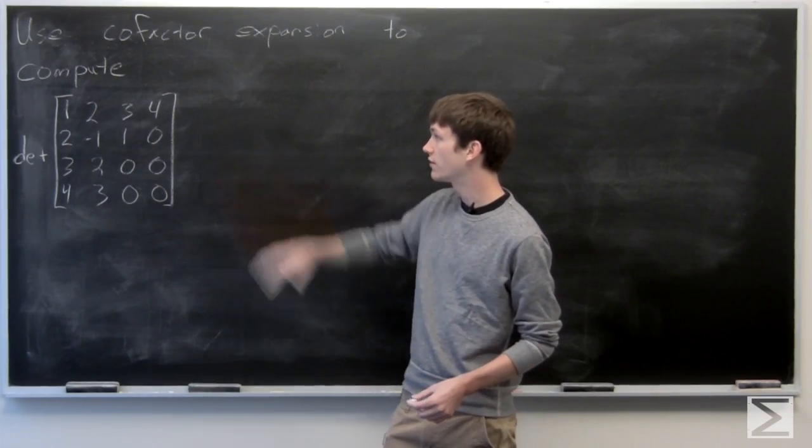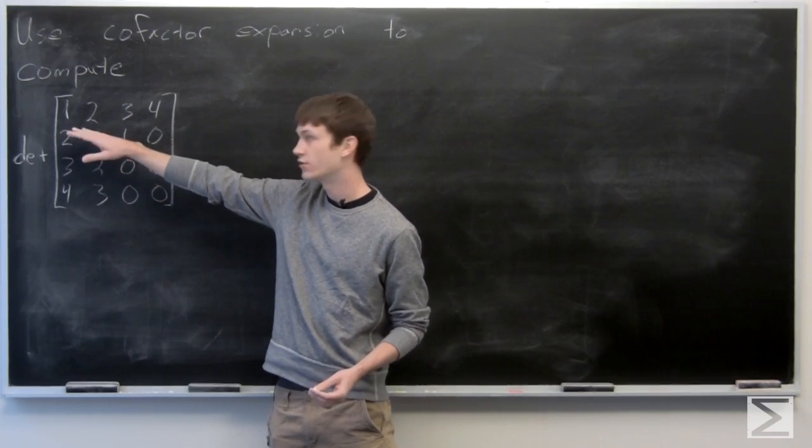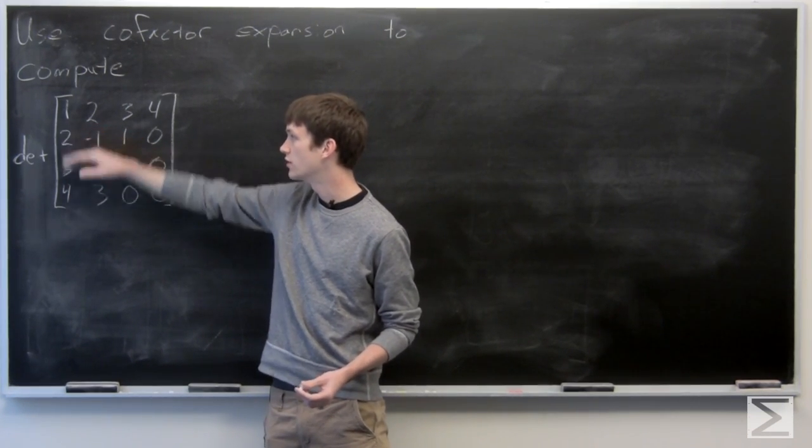In this problem, we're asked to use cofactor expansion to compute the determinant of our matrix with row 1 as 1, 2, 3, 4.